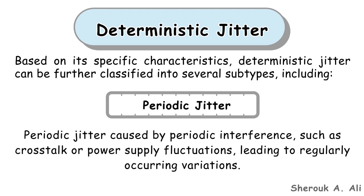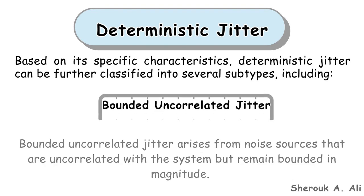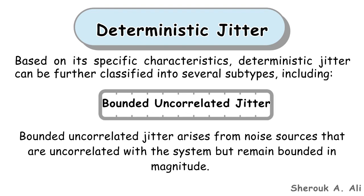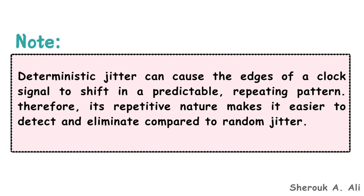Periodic jitter is caused by periodic interference such as crosstalk or power supply fluctuations, leading to regularly occurring variations. Data-dependent jitter occurs due to variations in signal timing that depend on the data pattern being transmitted, arising from variations in the rise and fall times of signal edges. Bounded uncorrelated jitter arises from noise sources that are uncorrelated with the system but remain bounded in magnitude, often caused by external sources such as electromagnetic interference from nearby devices. Deterministic jitter can cause clock signal edges to shift in a predictable, repeating pattern, making it easier to detect and eliminate compared to random jitter.